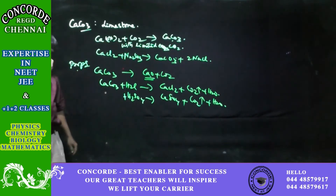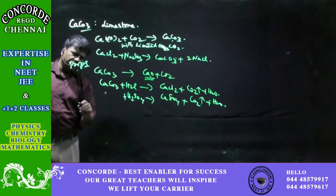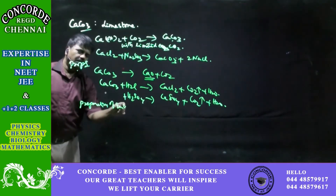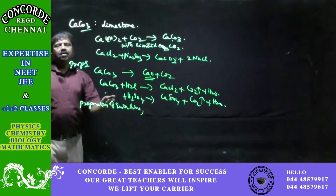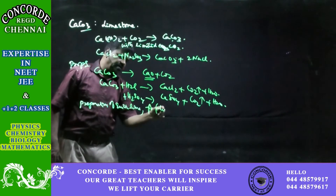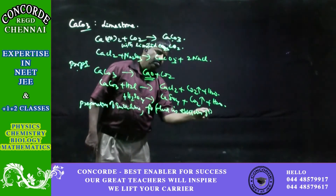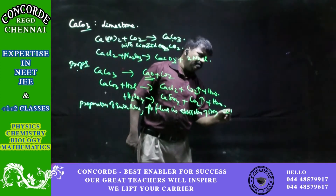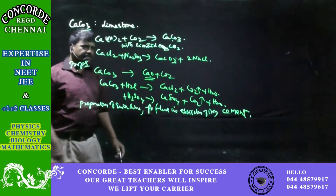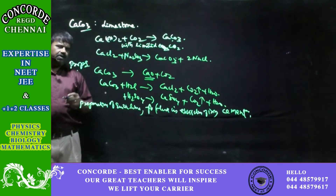These are the reactions of limestone. Limestone is used for preparation of quicklime. Along with magnesium carbonate, it is used as a flux in the extraction of iron. It is also used for the preparation of cement, being an important raw material for that purpose.